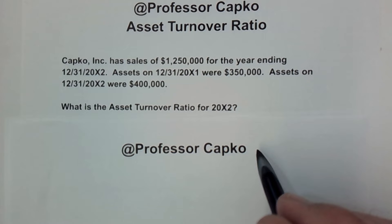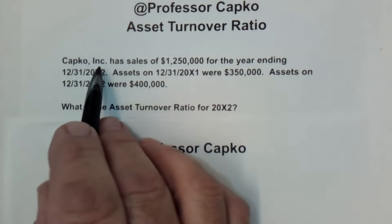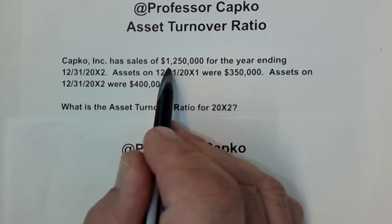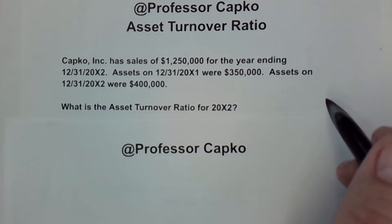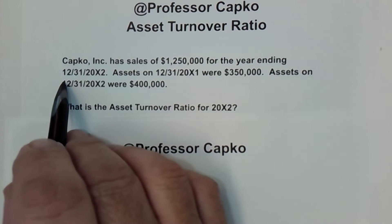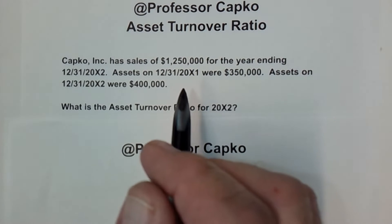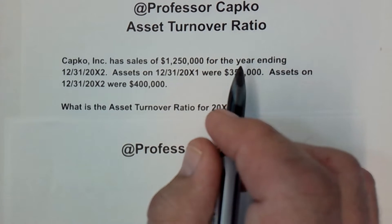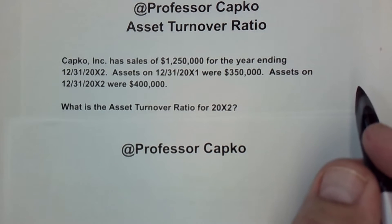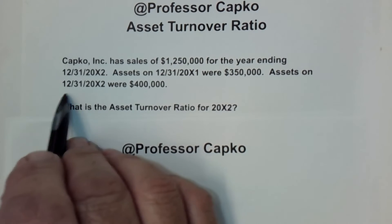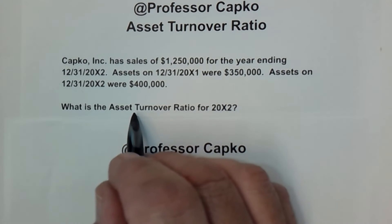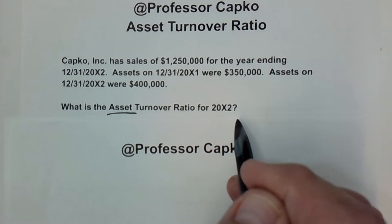In this example you're being asked to calculate an asset turnover ratio and you're given the following information. Capco Inc has sales of $1,250,000 for the year ending 12/31/20x2. Assets on 12/31/20x1 were $350,000. Assets on 12/31/20x2 were $400,000. What is the asset turnover ratio for 20x2?